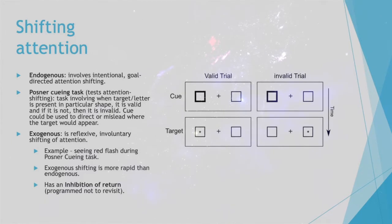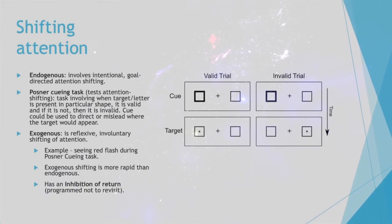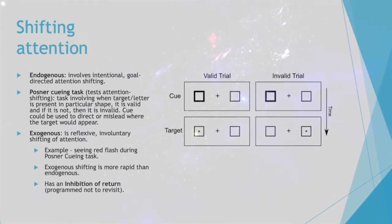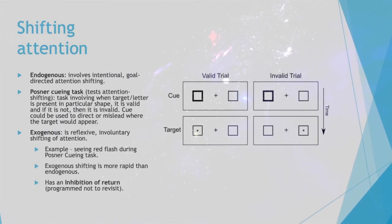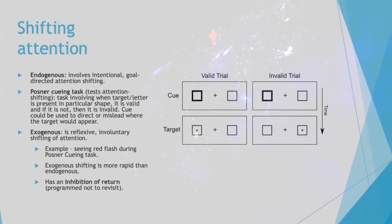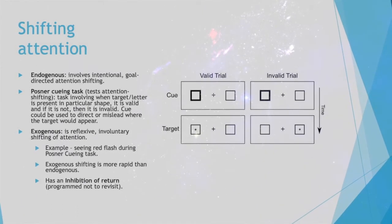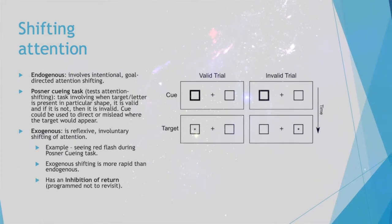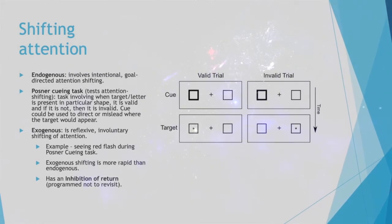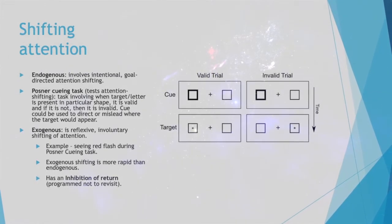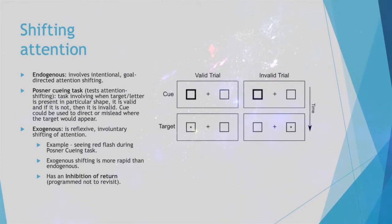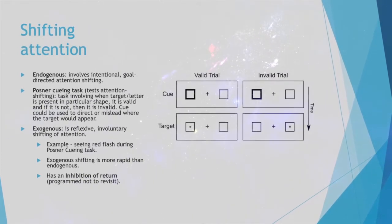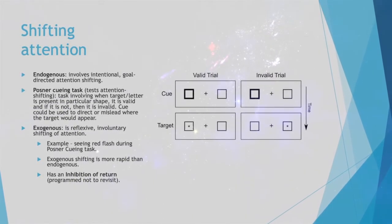Shifting Attention. There are endogenous cues, which involve intentional goal-directed attention shifting. The Posner cueing task tests attention shifting. This task involves when a target or letter is present in a particular shape that is cued — if so, it is valid; if not, then it is not valid. The cue could be used to direct or mislead where the target would be.